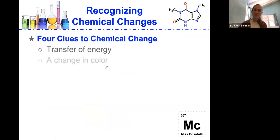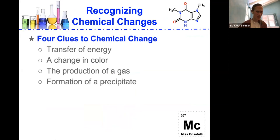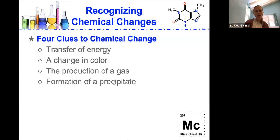If there's a transfer of energy, if there's a change in color, if there's a production of a gas or a formation of a precipitate or a solid at the end, those are four clues that tell you it was a chemical change. So transfer of energy, a change in color, the production of a gas or the formation of a precipitate or a solid.